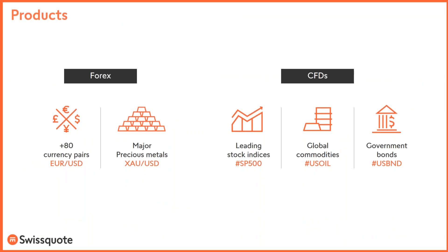These are the products that you can trade. You can trade Forex with more than 80 currency pairs, starting from the Euro/Dollar, the Dollar/Yen, and the GBP/USD, which are the most liquid currencies in the world. You can also trade metals like gold and silver — we offer these products in six different currencies, so you can trade gold against USD, or gold against GBP, for example.